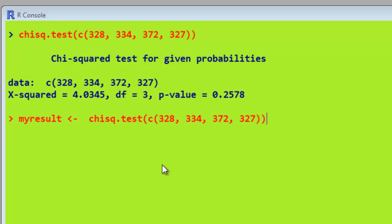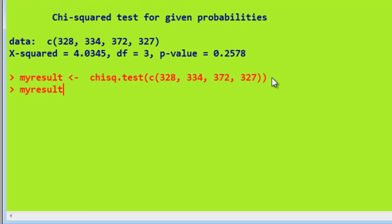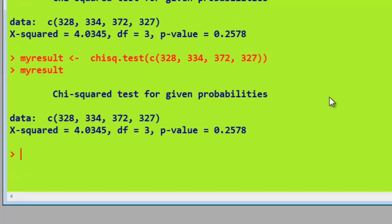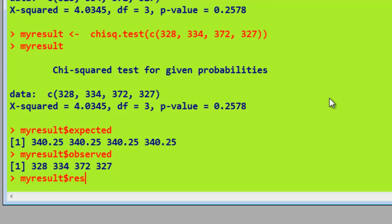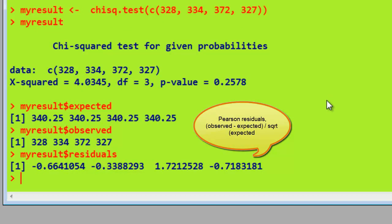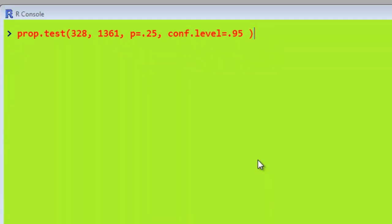We can do something cleverer if we save the results of the chi-square test to my result. So we say my result gets the results of the chi-square test, type in my result, same as before. But now we can say my result, and ask for slightly more detail. So we're saying my result, we want the expected data, there we are. Let's say my result, observed, or my result, residuals, which I should expect is a difference between the two.